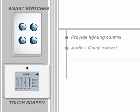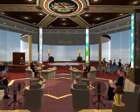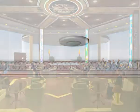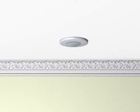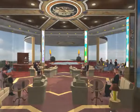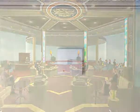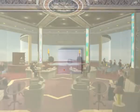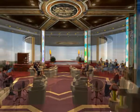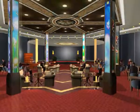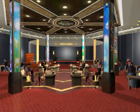In restaurants, touchscreen panels provide lighting control and activate and control audio-visual equipment. Dining spaces may also be fitted with occupancy sensors to switch lights on and off as guests enter and leave, light level sensors that maintain constant illumination, and temperature sensors that control the air conditioning.